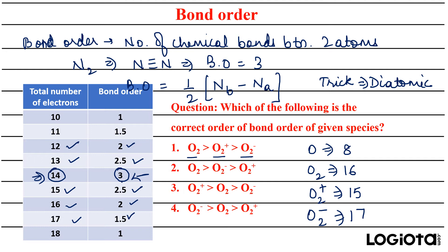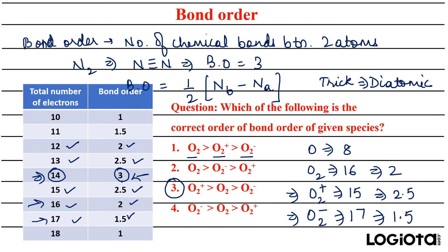For O₂ with 16 electrons, the bond order is 2. For O₂⁺ with 15 electrons, the bond order is 2.5. For O₂⁻ with 17 electrons, the bond order is 1.5. You don't need to draw the molecular orbital diagram at all. So O₂⁺ has the highest bond order and O₂⁻ has the lowest — the correct option is the third one.